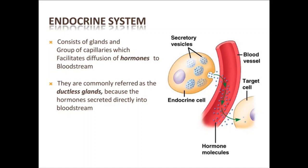We can also define the endocrine system as: the endocrine system is a chemical messenger system comprising feedback loops of hormones released by internal glands of an organism directly into the circulatory system, regulating distant target organs or cells. It is called a chemical messenger system because the chemicals we call hormones are released through feedback loops. These hormones come from the internal glands of any organism.